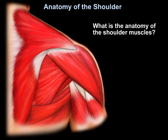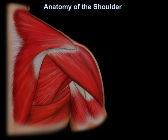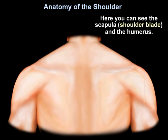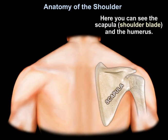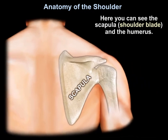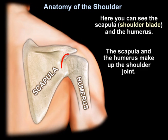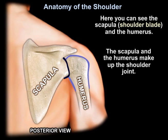What is the anatomy of the shoulder muscles? Here you can see the shoulder blade, or the scapula, and here you can see the humerus bone. These two bones make the shoulder joint.